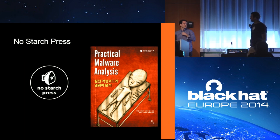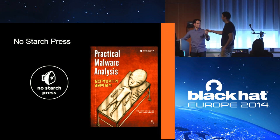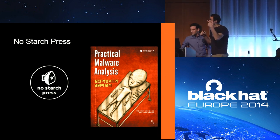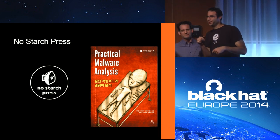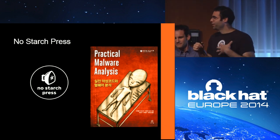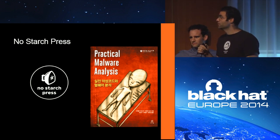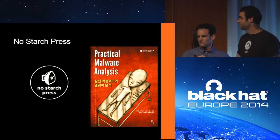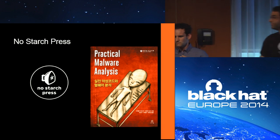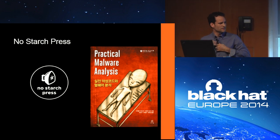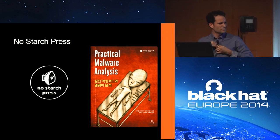Andy, you want to introduce yourself? I'm Andy Honing. I work for Google on virtualization security. Before that, I was with NSA for eight years doing malware and reverse engineering. I'm based in New York City and Mike's based in Seattle. This is, I think, the first time we've presented together.